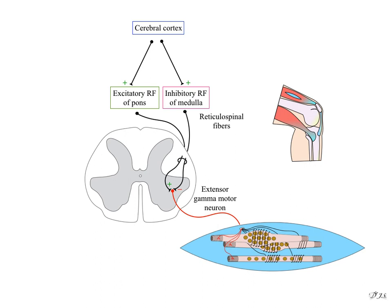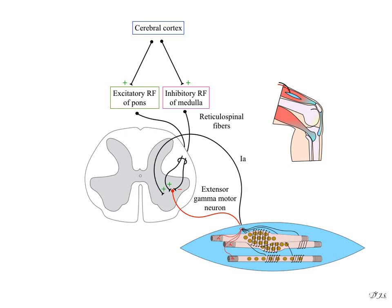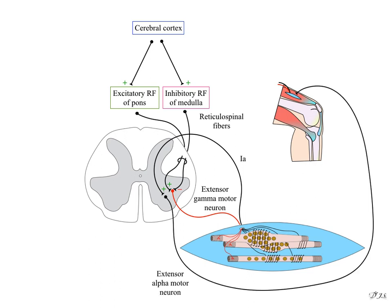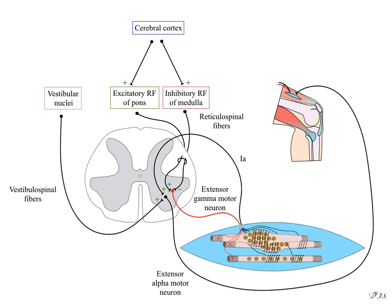As signals reach the gamma motor neuron, miniature contraction at the polar ends of the intrafusal fibers causes the central portion to stretch. The signals generated are carried via Group Ia fibers to the alpha motor neuron and the ventral root, resulting in contraction of the muscle. Vestibular nuclei also stimulate the alpha motor neuron. Flexor alpha motor neurons are stimulated by corticospinal fibers and rubrospinal fibers via the red nuclei.